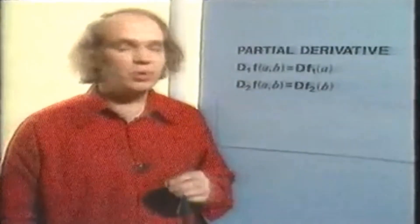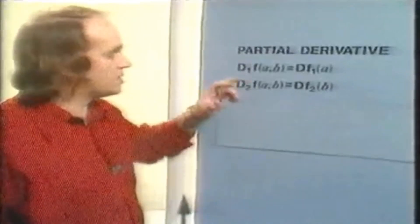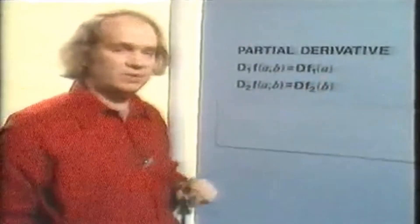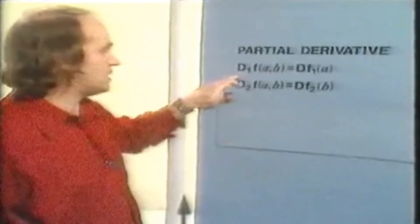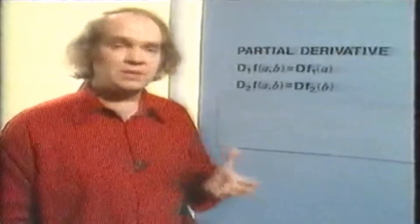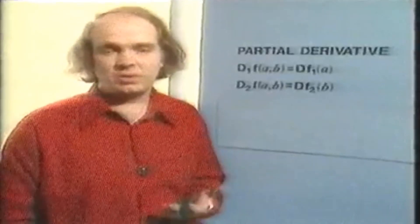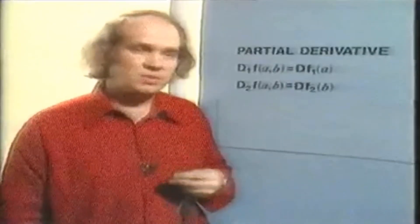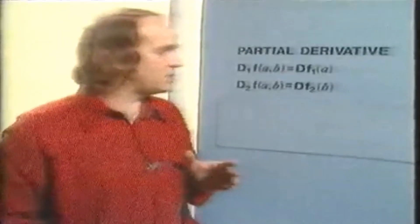In general, for any function f from R² to R and a point (a, b) in its domain, we can set up functions f₁ and f₂. If both of these are differentiable at the points a and b respectively, then we have two partial derivatives, D₁f and D₂f at (a, b). If both partial derivatives exist, we say the function is partially differentiable at (a, b). As the name indicates, we haven't yet got to the concept of differentiable. But partial differentiation, from a geometrical point of view, is quite interesting.